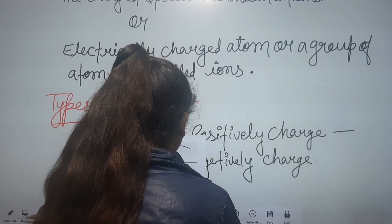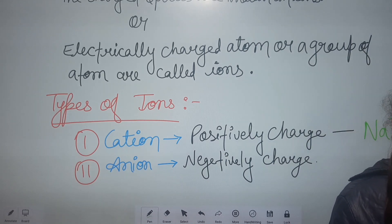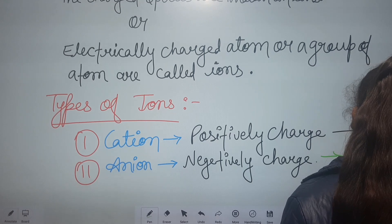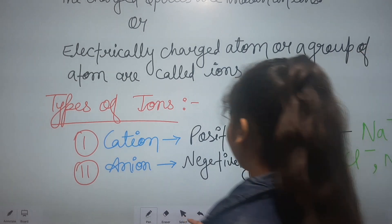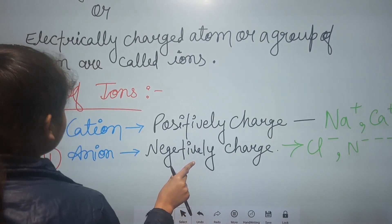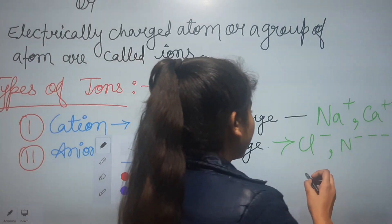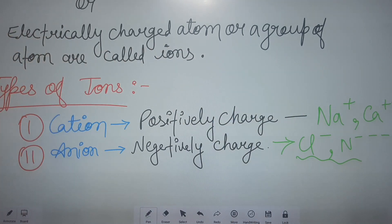For example, cations include Na+ (sodium) and Ca2+ (calcium). Examples of anions include Cl- (chloride) and N3- (nitride). These are examples of cations and anions — positively charged species like sodium and calcium, and negatively charged species like chloride and nitride. So this is all about ions and their types.